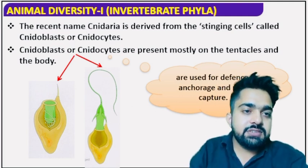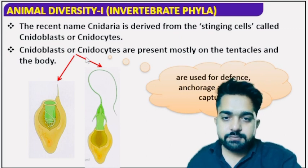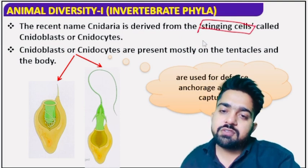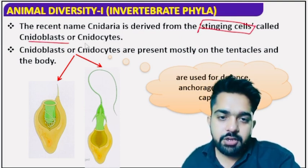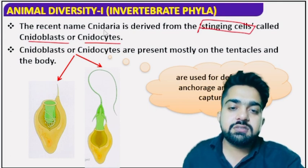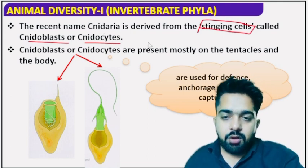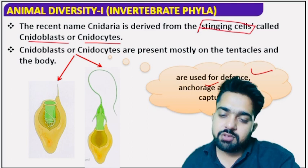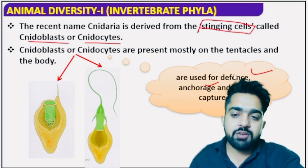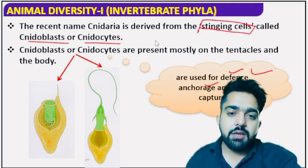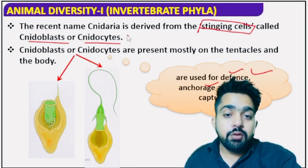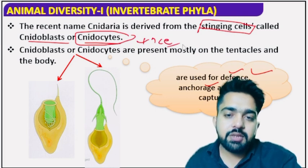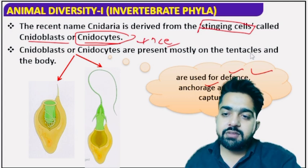Why is this phylum considered phylum Cnidaria? It is called Cnidaria due to the presence of stinging cells. Stinging cells, also called cnidoblasts or cnidocytes, are those cells responsible for defense, anchorage, and pre-capturing of prey. These cnidocytes are present on the tentacles.